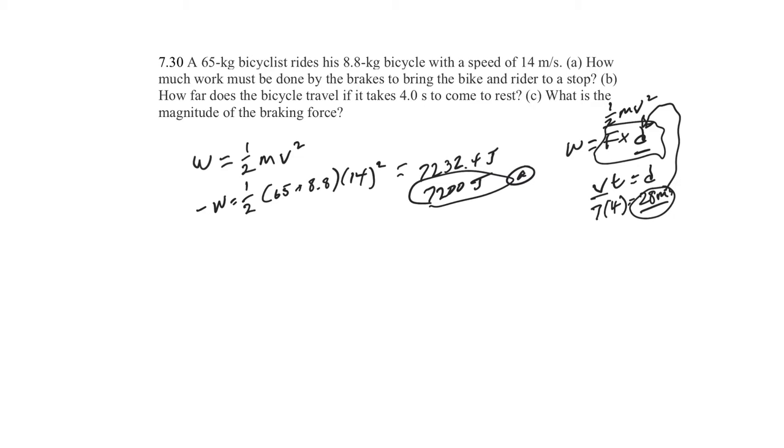All right, so we know that the distance is 28 meters, we know the work is 7,200 joules. So 7,200 joules equals F times 28, divide by 28, force equals 257 newtons, two significant figures, 260 newtons.